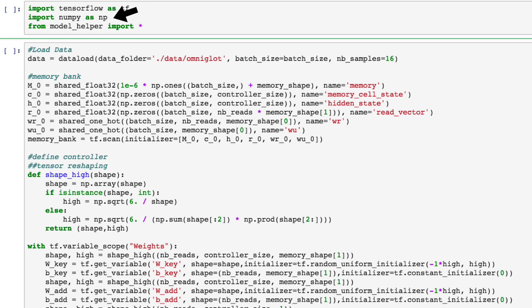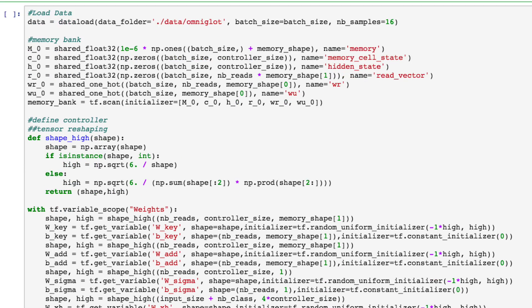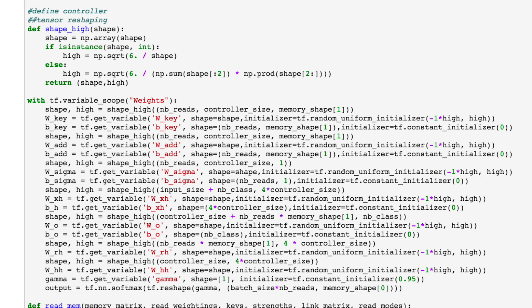We'll only need TensorFlow and NumPy for our model. We'll first define our memory bank, initializing each of the variables that make it up, then we can define our controller, a feedforward neural network. We'll define each set of weights and biases layer by layer, until we've reached the output layer.